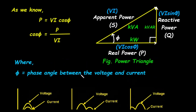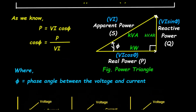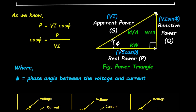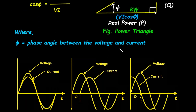Looking back at our power triangle, we can see these relationships visually. The base is real power, which is V times I times cosine of Φ. The vertical side is reactive power, which is V times I times sine of Φ. And the hypotenuse is apparent power, which is V times I. The angle Φ is the crucial element here — it represents the phase angle, which is the time difference or shift between the voltage and current waveforms. Let's examine how this phase angle changes depending on the type of load in the circuit.